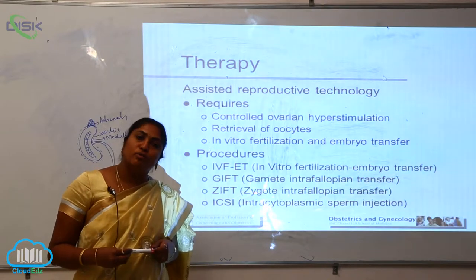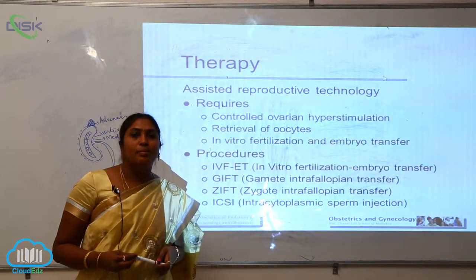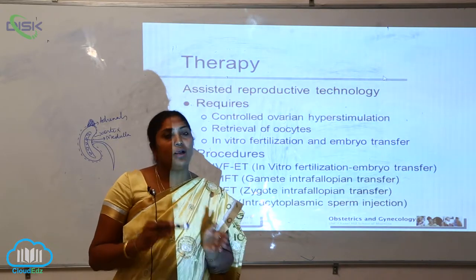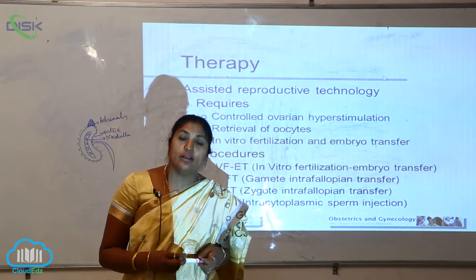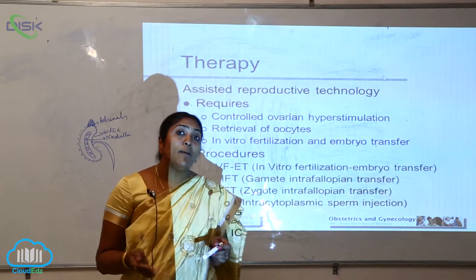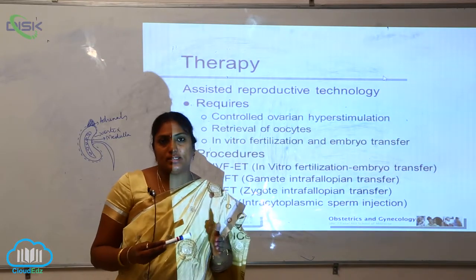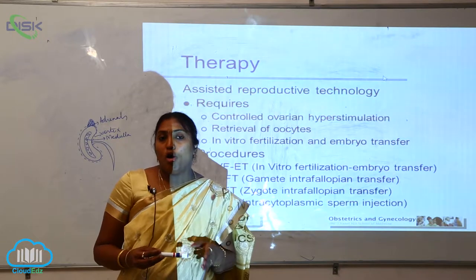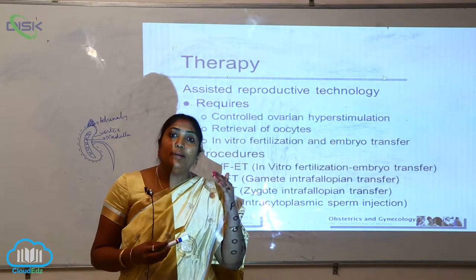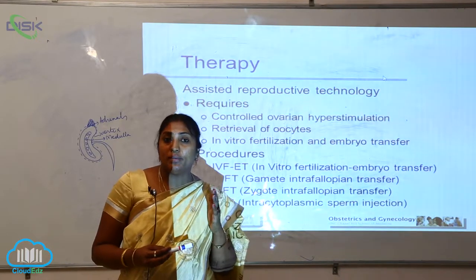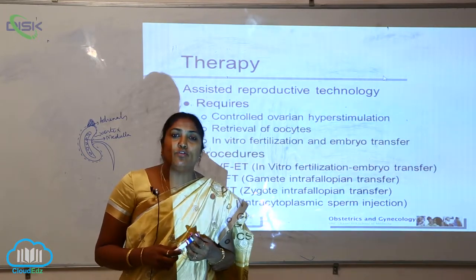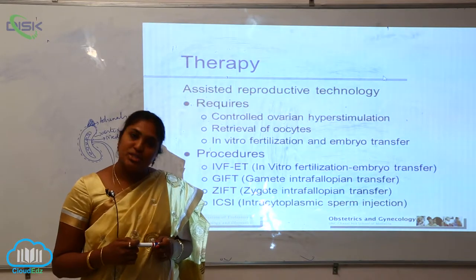The process of ovulation is nothing but the formation of an egg from the ovary. This process, called oogenesis, starts when the baby is still in the mother's womb. Until puberty, mitotic and certain meiotic divisions take place, and after puberty the ovulation process begins.